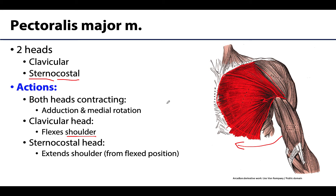Interestingly, when the two heads contract independently they can be antagonistic to one another. The clavicular head contracting by itself will cause flexion — the arm moving anteriorly. Whereas the sternocostal head contracting independently can extend the shoulder, particularly from a flexed position. So it is a muscle that can be antagonistic to itself depending on which fibers are contracting.